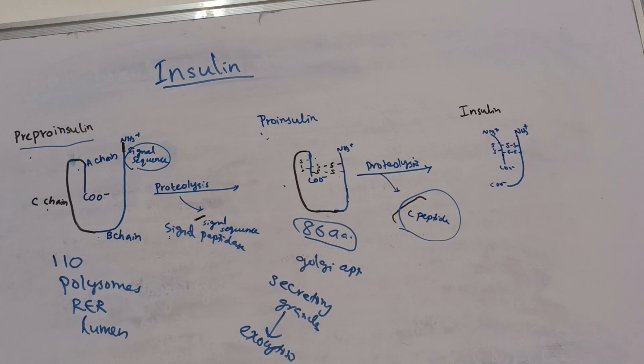And this C peptide is essential for proper insulin folding. So this is about the biosynthesis of insulin. This is today's topic. Thank you for watching.